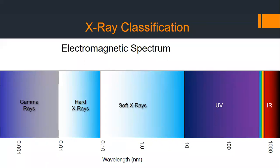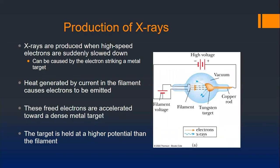Soft x-rays are close to the UV part of the spectrum, less penetrating, and have fewer applications. Hard x-rays are what we use to create medical x-rays and look inside packages at airports — very penetrating ionizing radiation. When you get a medical x-ray, you're getting ionizing radiation but at such a low level your body handles it fine. X-rays were first produced by Wilhelm Röntgen, a German scientist; most of the world calls them Röntgen rays. The term x-ray means unknown — which is odd since we now know they're electromagnetic waves.